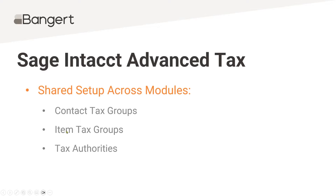We're also going to talk about item tax groups. You'll have the ability to set up items in both order entry and purchasing, and establish whether each particular line item is taxable or not. The simplest example would be materials being taxable but labor isn't. So you can have an item tax group called 'not taxable' for labor but have it taxable for material.